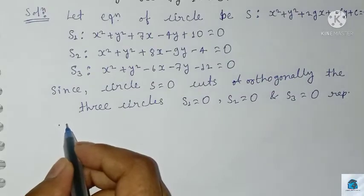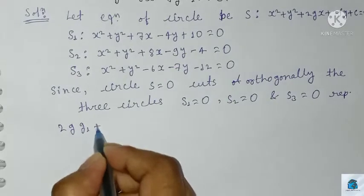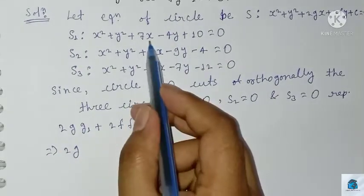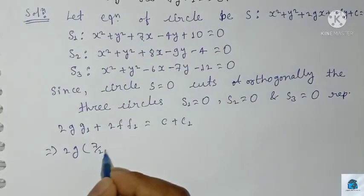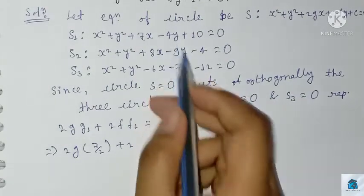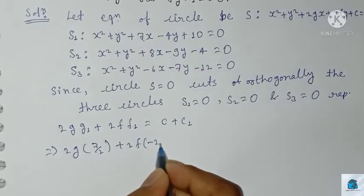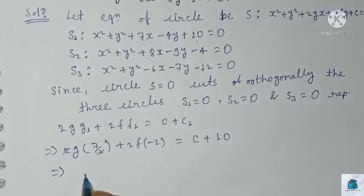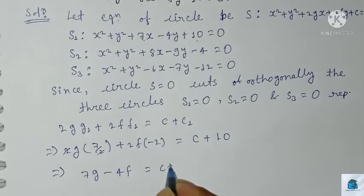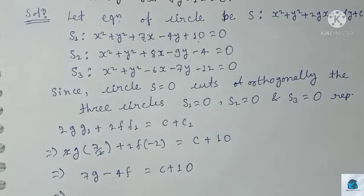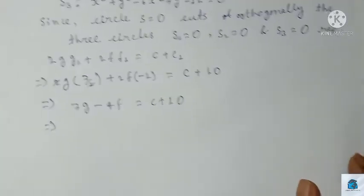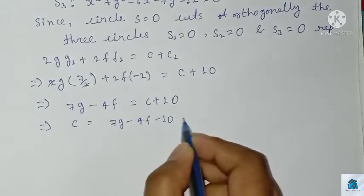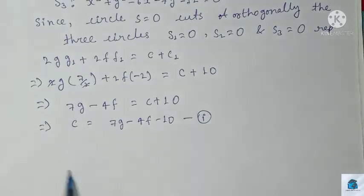Applying the orthogonality condition for S and S1: g1 = 7/2 and f1 = -2, c1 = 10. So 2g·(7/2) + 2f·(-2) = c + 10. The 2s cancel, giving 7g - 4f = c + 10, so c = 7g - 4f - 10. Call this Equation 1.